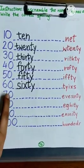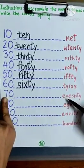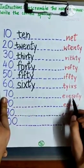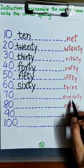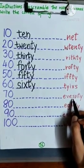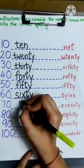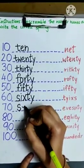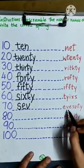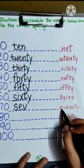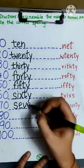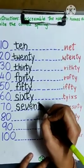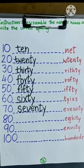Next number is 70 and we have letters E-V-E-S-N-T-Y. So, consider it as 70, number name starts with S. We will write here S, and then E, V, then E. After that N, then T, and Y, seventy.